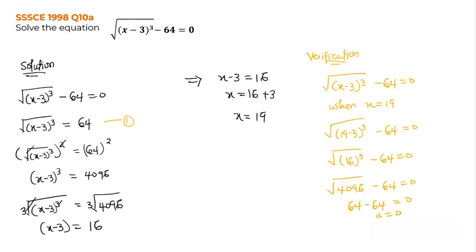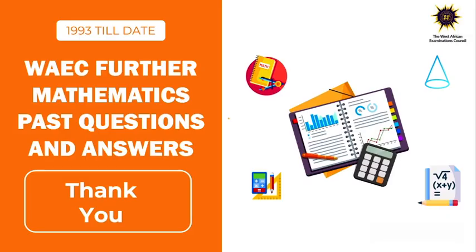So since substituting the value of x equals 19 into the equation gives us 0, it means that our answer x equals 19 is correct. Thank you so much for watching and I'll see you in the next video. Bye-bye.